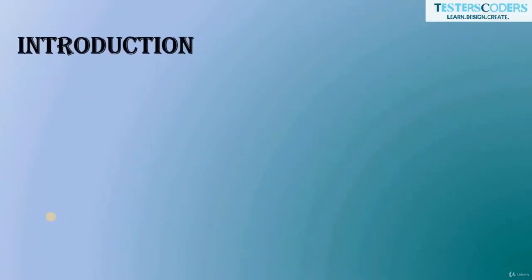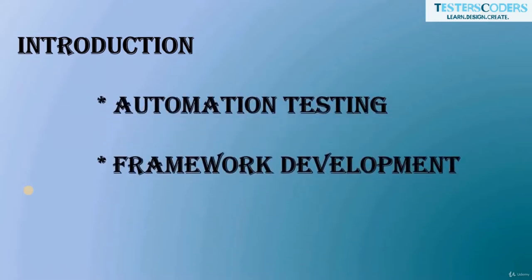Hi everyone, welcome to Testers Coders tutorial series. In this course you will learn about automation testing and framework development. Basically, testing is comparing actual outcome with the predicted outcome. Manual testing is where you compare the actual and predicted outcome yourself, but in automation testing a software will help you compare them without actually performing the steps manually, using coding tools and libraries.